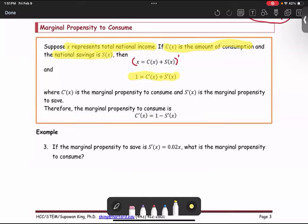C prime of X is called the marginal propensity to consume. S prime is the marginal propensity to save. Therefore, when you rearrange the term to find the marginal propensity to consume or solve for C prime of X, we get 1 minus S prime of X.